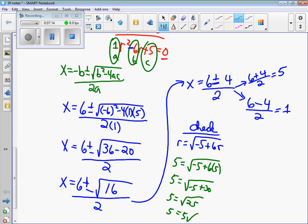Now let's check 1. We substitute 1 in. 1 equals the square root of negative 5 plus 6 times 1. 1 equals the square root of negative 5 plus 6, which is 1. 1 equals the square root of 1. 1 equals 1. That's good too. So both of them are good answers.